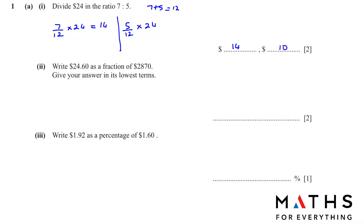Next one: write $24.60 as a fraction of $2870, giving your answer in its lowest form. Very easy - just put this whole thing in the calculator and you will get 3 over 350.